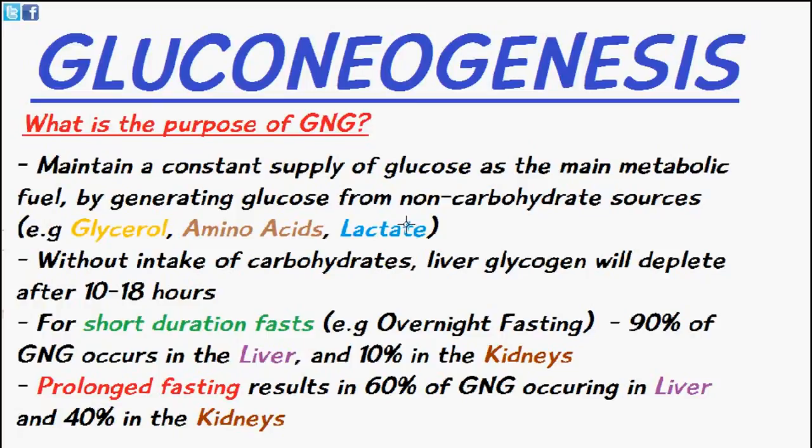Welcome to 5-Minute School. In today's video we're going to be discussing gluconeogenesis. So what is the purpose of gluconeogenesis? It maintains a constant supply of glucose as the main metabolic fuel by generating glucose from non-carbohydrate sources like glycerol, amino acids, and lactate.